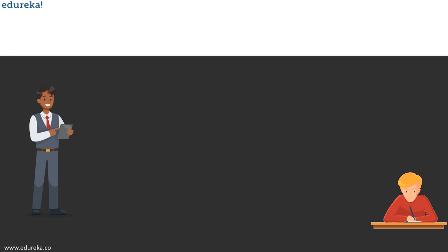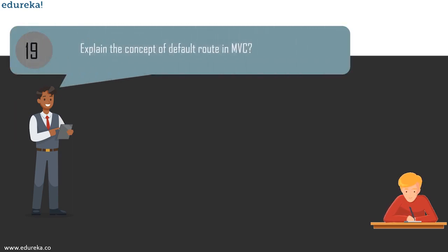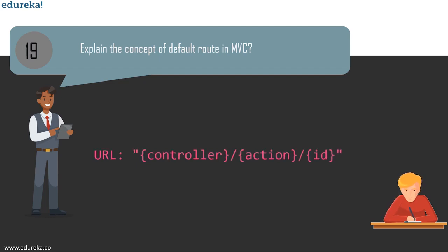The next question is: explain the concept of default route in MVC. The default ASP.NET MVC project templates add a generic route that uses a URL convention to break the URL for a given request into three named segments: controller, action, and ID. This route pattern is registered via a call to the MapRoute extension method of RouteCollection.